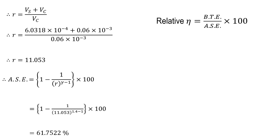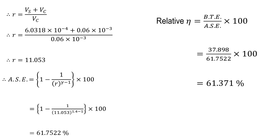Relative efficiency is the ratio of actual efficiency to air standard efficiency: brake thermal efficiency divided by air standard efficiency, multiplied by 100. That is 37.898 divided by 61.7522 into 100, giving 61.371 percent. In this way we can solve examples on IC engines.